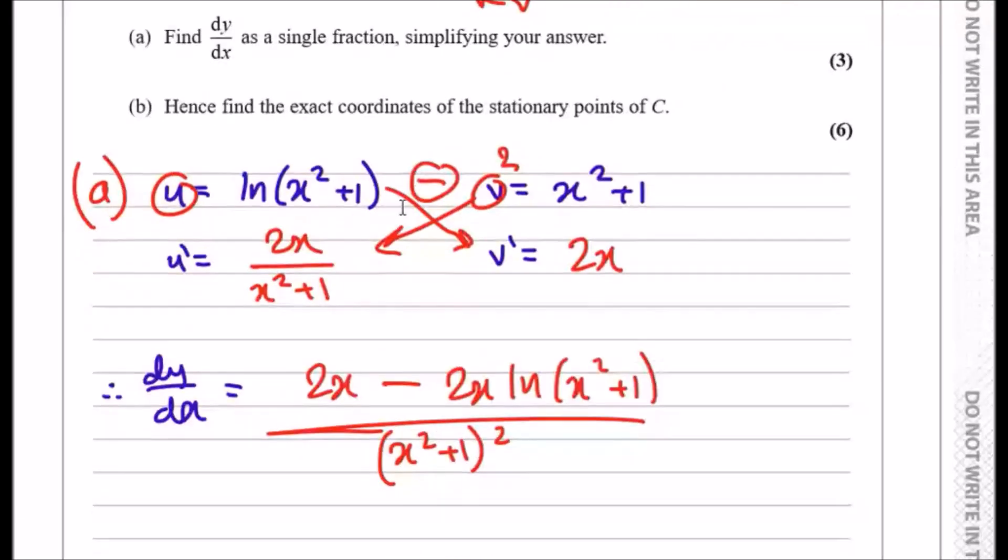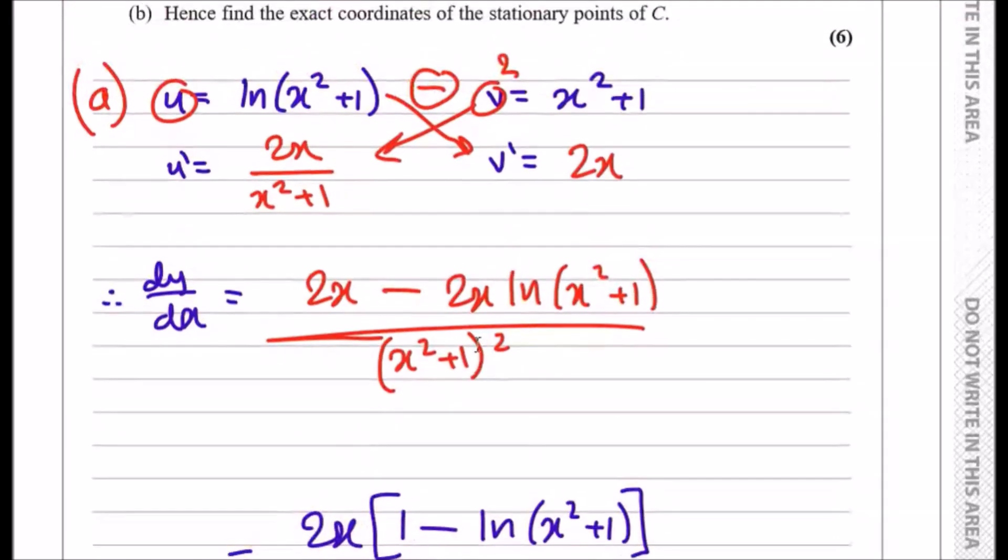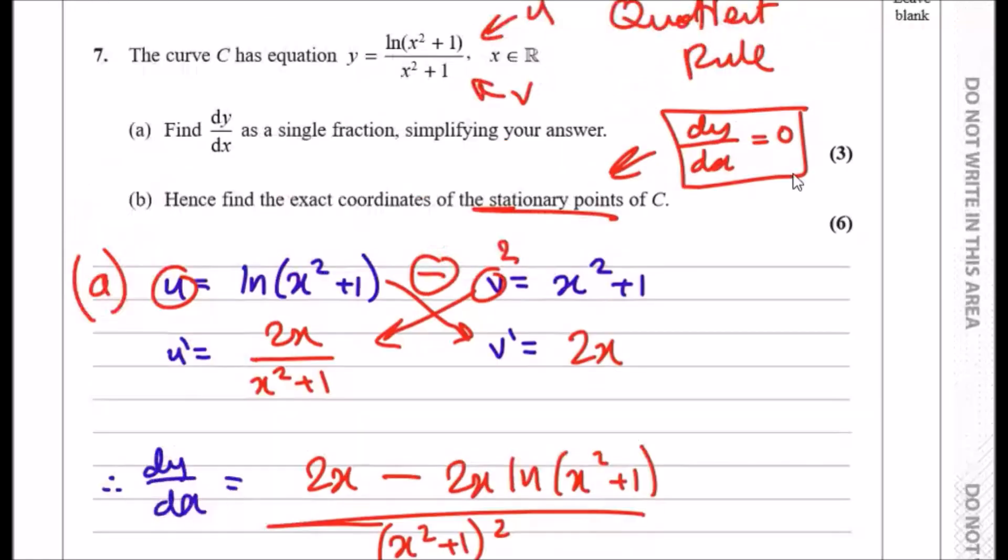Hence—and when I use the word hence they always refer to making sure that you use the previous solution—find the exact coordinates of the stationary points. Keyword: when you hear stationary, think of dy over dx equals zero and solve for x. And of course, when you solve for x, you can find y.